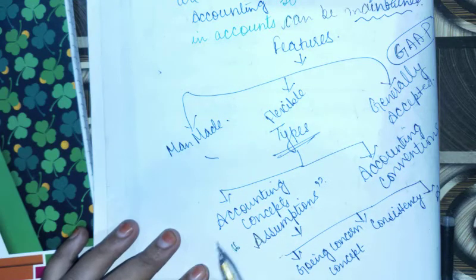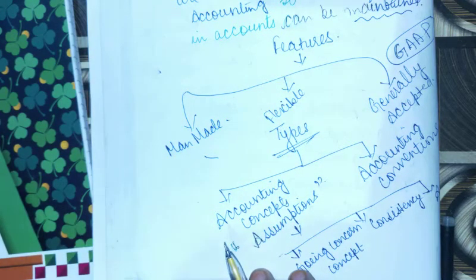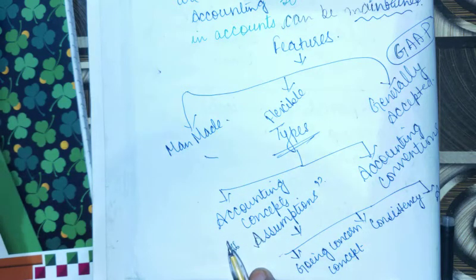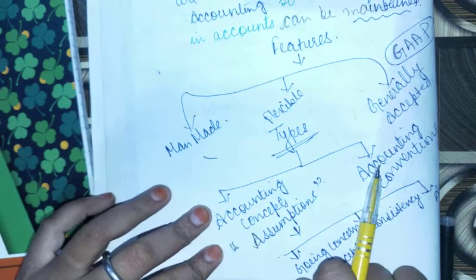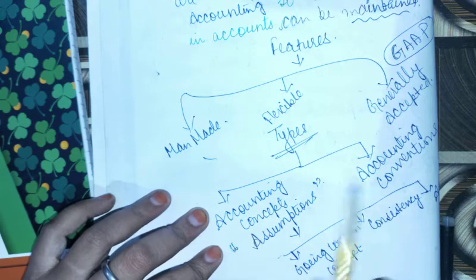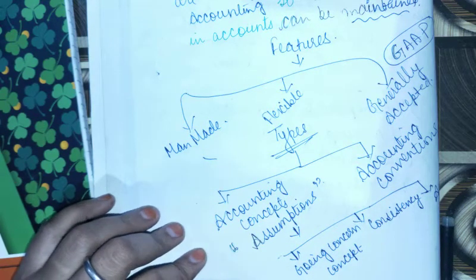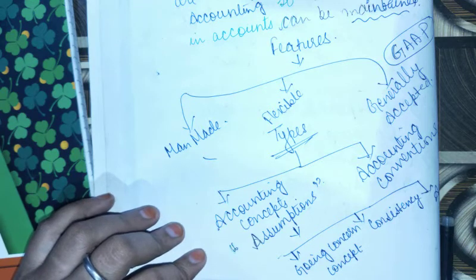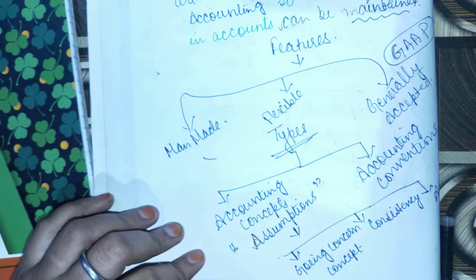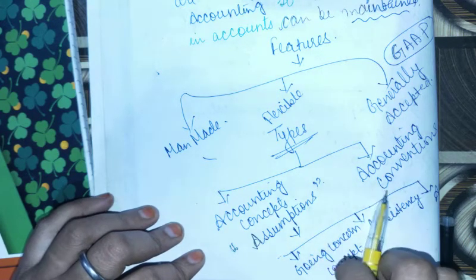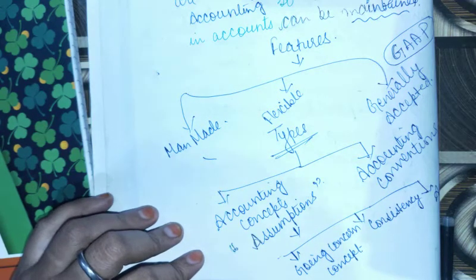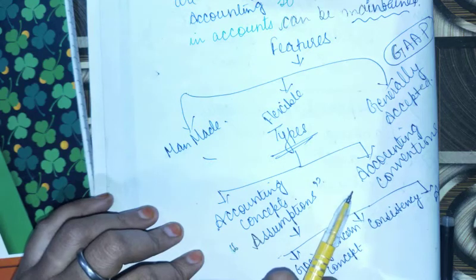Accounting concepts are all about assumptions that you can make. It is because of tradition that goes on. In accounts, we follow certain practices that we call accounting conventions. There are about 11 conventions available.